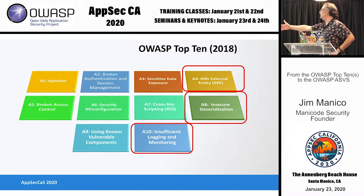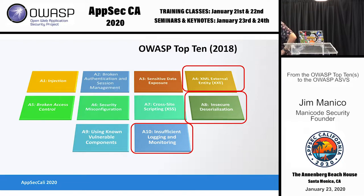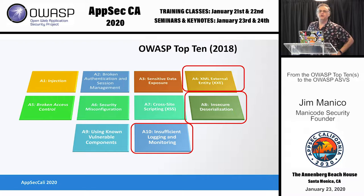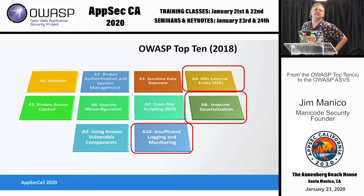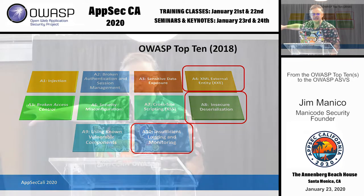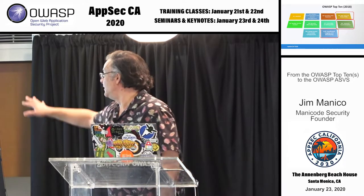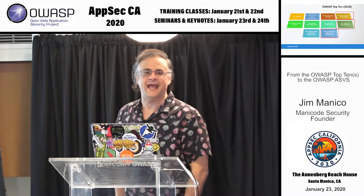Let's get this talk started. So this is the OWASP Top 10. And I think this is important because it is a large number of people's on-ramp and introduction into application security, in particular web security. Can anybody tell me why this has become the on-ramp to application security? What driver pushes people to look at this as their first entry into application security?